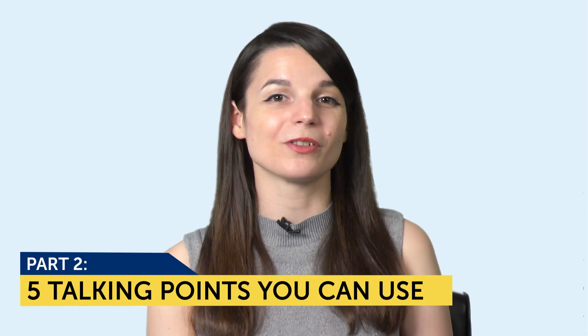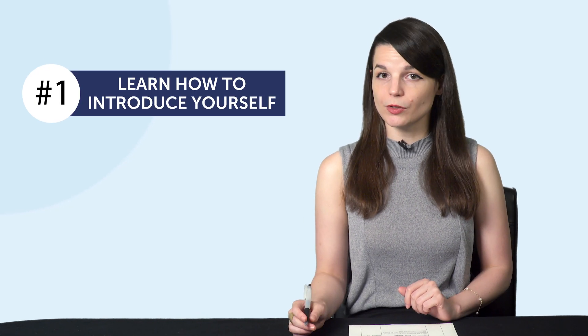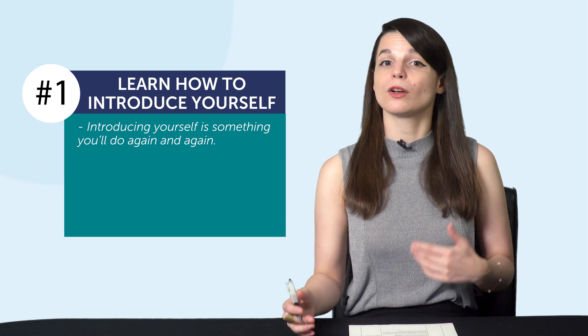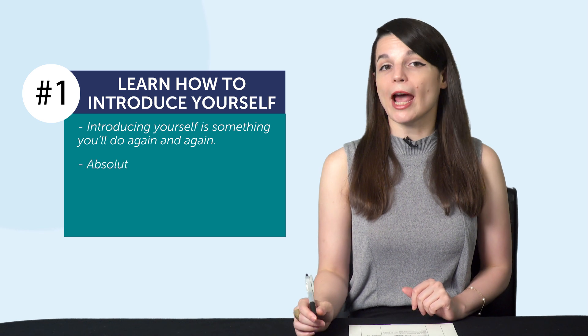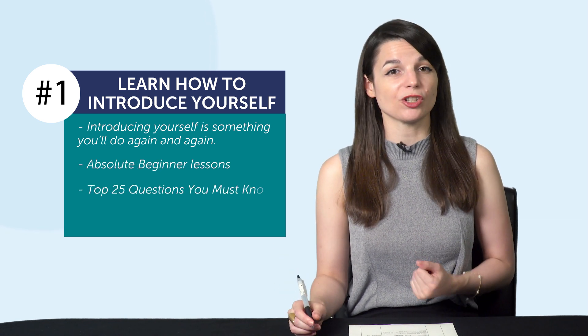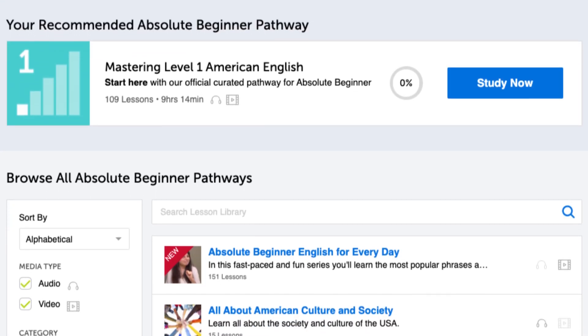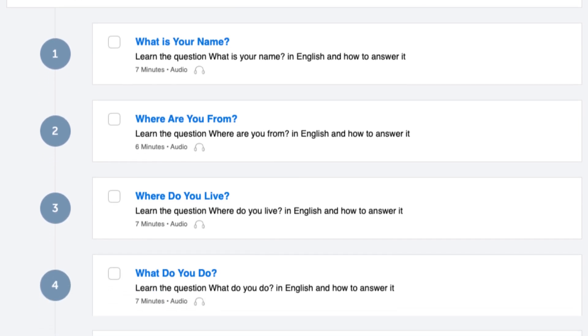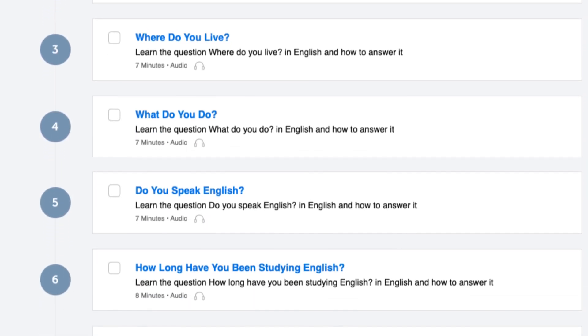Part 2: Five talking points you can use. The first one is: learn how to introduce yourself in your target language. Introducing yourself is something you'll do again and again every time you meet someone new, so learning the relevant phrases is a must. If you've done the first few lessons on our site, you can already do this. If not, check out our absolute beginner lessons and the top 25 questions you must know. You'll learn basic conversations with our quick three to fifteen minute lessons, and we'll give you the exact lines to use along with the translations so that you can use them in conversations.